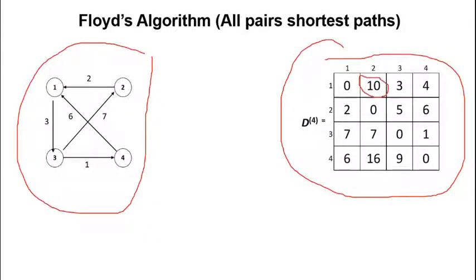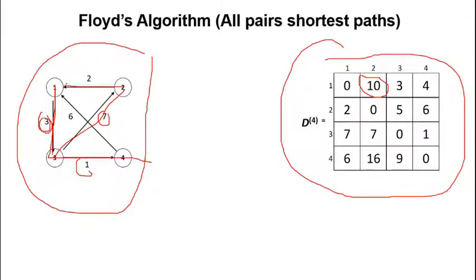Looking at the matrix, the shortest path from one to two has a total weight of ten. This means we go via vertex three and then to two: three plus seven equals ten — that is actually the shortest path. For one to three: direct path, weight three. For one to four: we go one to two to three, then to four. For two to four: two to two, weight two.